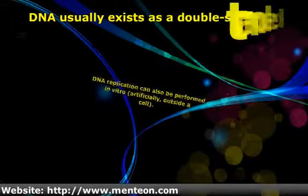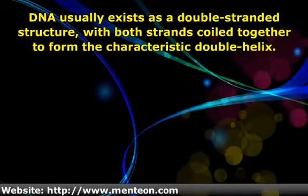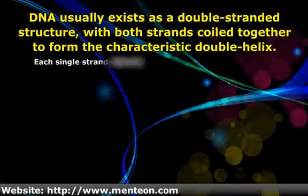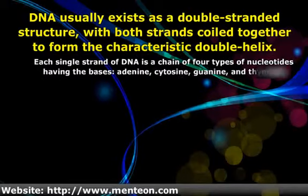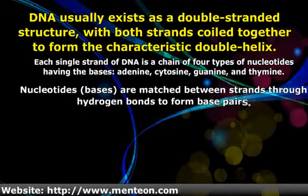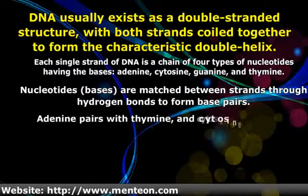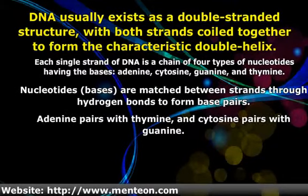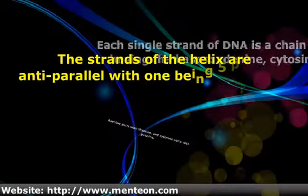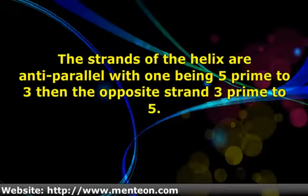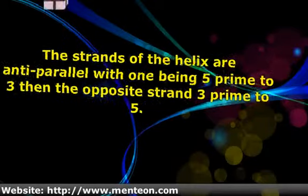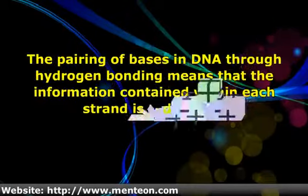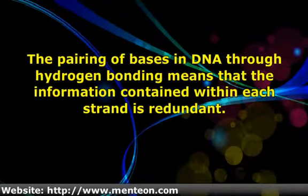DNA usually exists as a double-stranded structure, with both strands coiled together to form the characteristic double helix. The strands of the helix are antiparallel, with one being five prime to three prime, and the opposite strand three prime to five prime. The pairing of bases in DNA through hydrogen bonding means that the information contained within each strand is redundant.